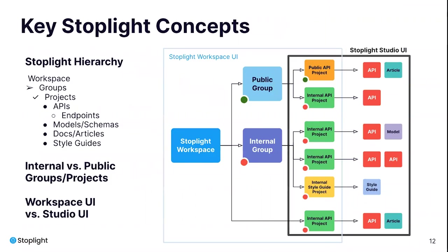Now let's review some important concepts within Stoplight — namely the Stoplight hierarchy and the two main user interfaces you'll encounter. Your hierarchy begins within your workspace, which contains users and teams. Teams are groups of users grouped together for easier management. Then you have projects and groups — groups are a collection of projects stored together in a folder for easier management. Within your projects you'll have APIs and style guides, and within your API projects you'll have endpoints, models and schemas, docs and articles, and applied style guides.